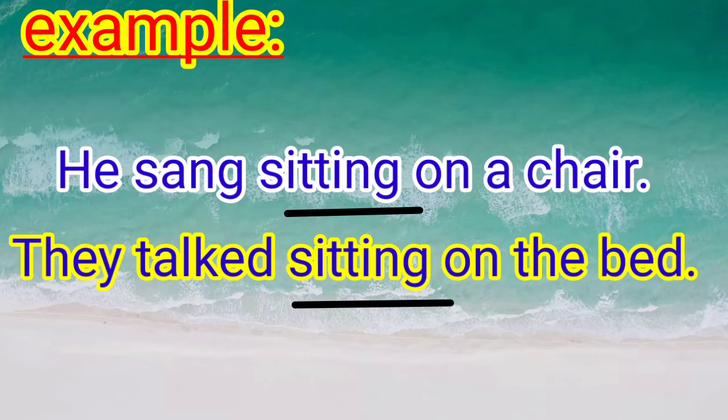In the first sentence the subject is 'he' — third person singular number. In the second sentence the subject is 'they' — third person plural number. Yet the verb form 'sitting' does not change.